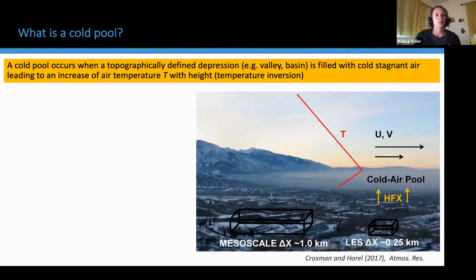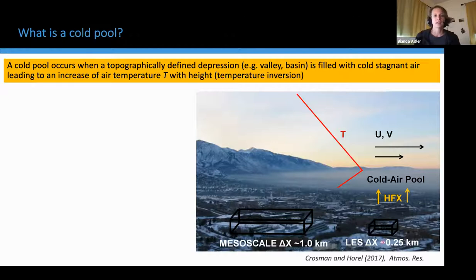Before I start, just a few basics on cold pools. A cold pool occurs when a topographically defined depression, such as a valley or basin, is filled with cold, stagnant air. This leads to an increase of air temperature with height. This is illustrated here for a cold pool in the Salt Lake Valley — the cold pool is visible as this polluted, moist layer, and the temperature structure given by the red line increases with height to the top of the cold pool, and then decreases.